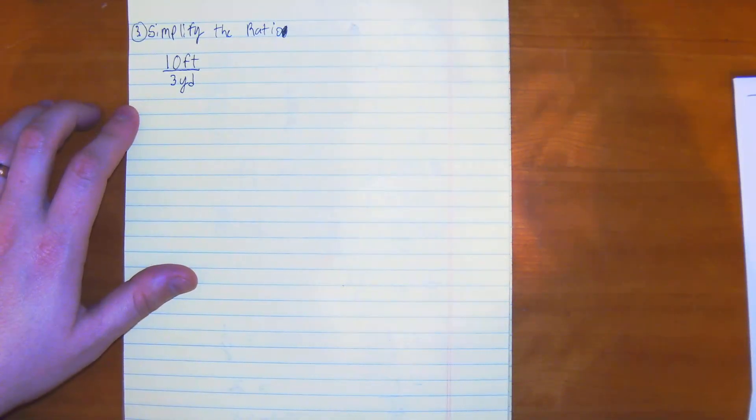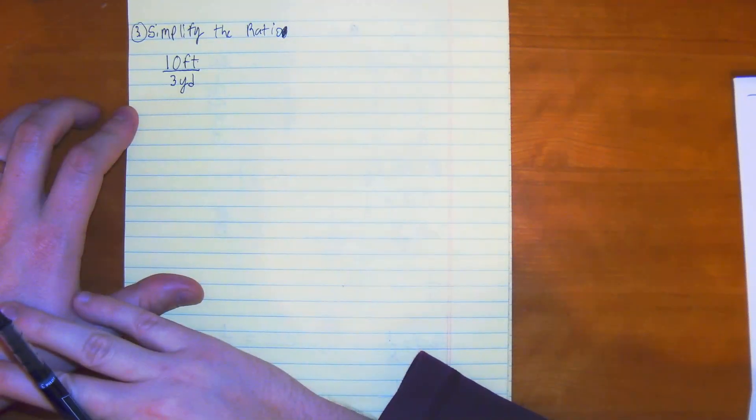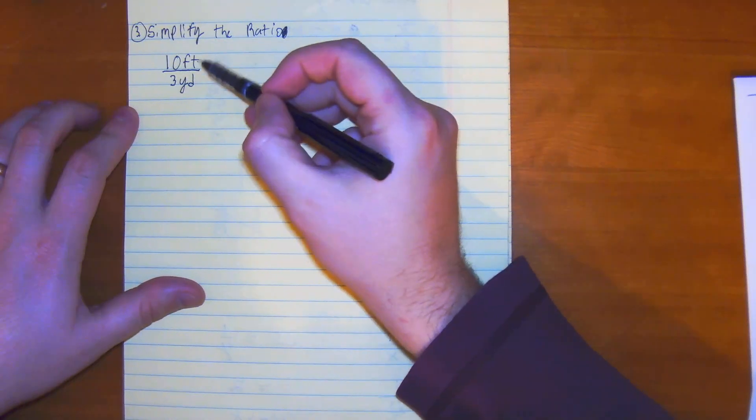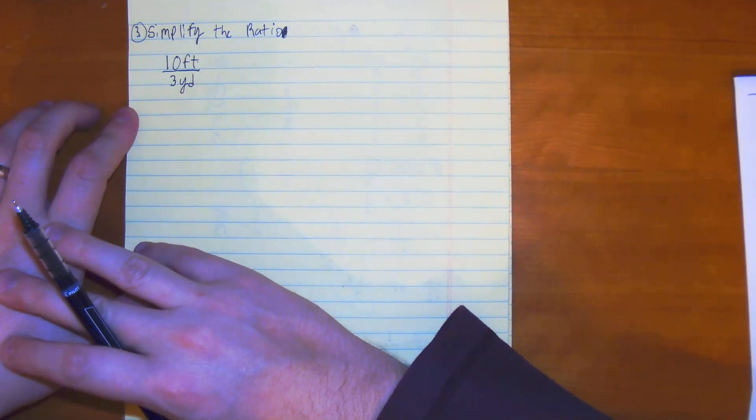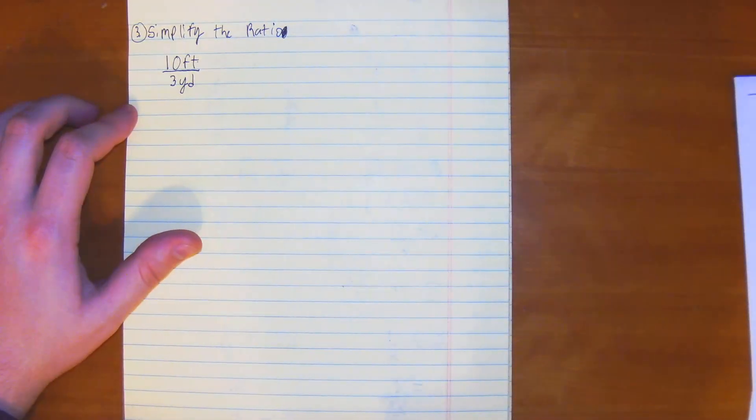Well, we're in a bit of an issue right here. We can't just cross out the feet and yards because they're two different types of units. As a result, we need to convert it so we can get rid of the units. Right here, feet and yards.